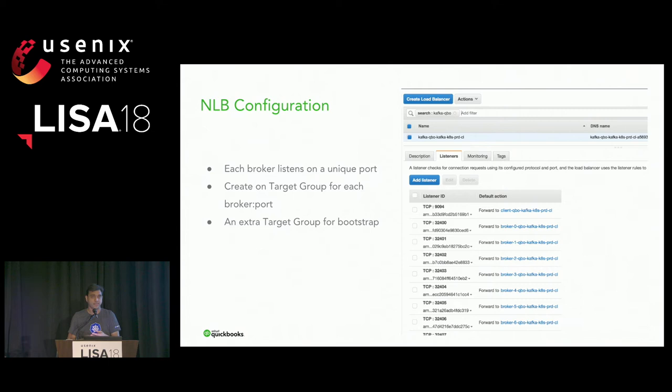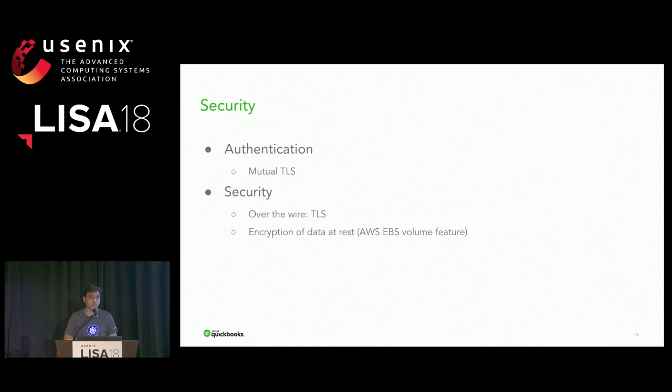The client port is 9094. It does nothing other than redirect the request to any of the nine actual brokers, which returns the NLB name and port numbers — these are your nine brokers. One other reason to use NLBs was to use Amazon's private link, so that things running in other AWS accounts don't have to deal with complex security groups.